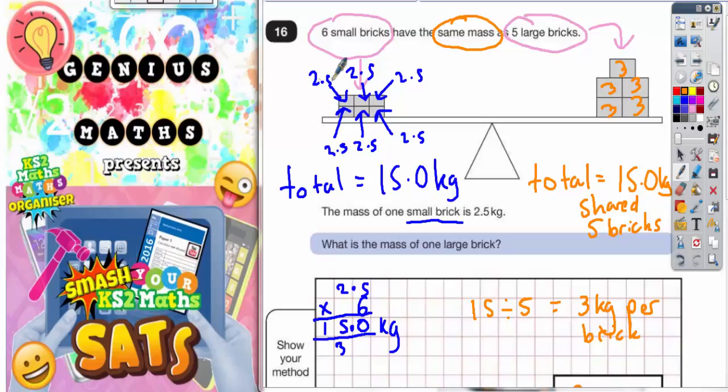And if each of these bricks is 2.5, that's 2.5, 5, 7.5, 10, 12.5, 15.